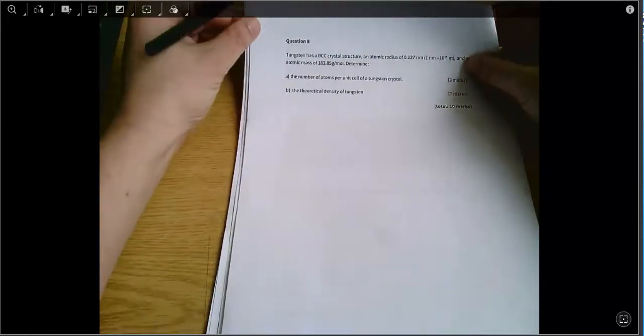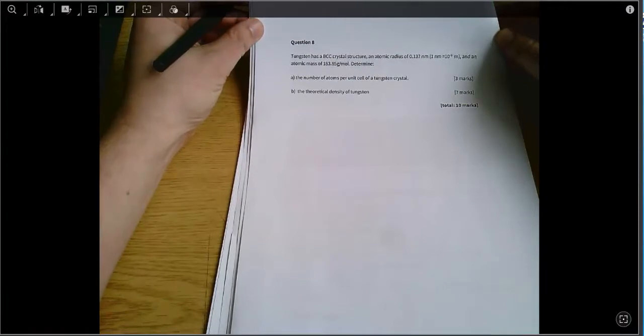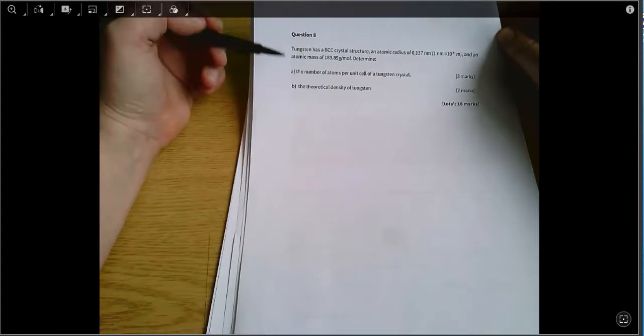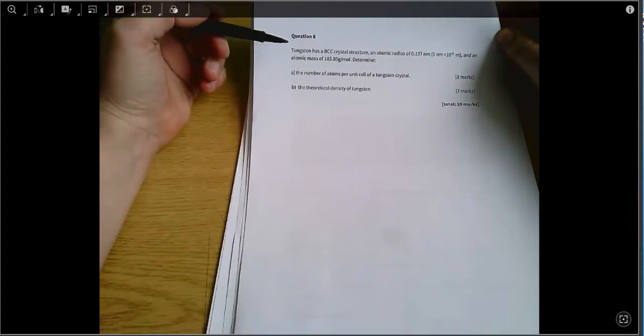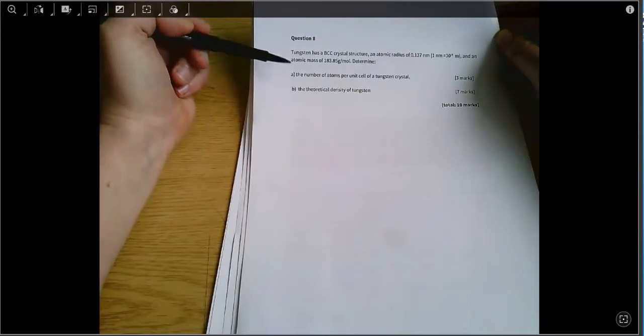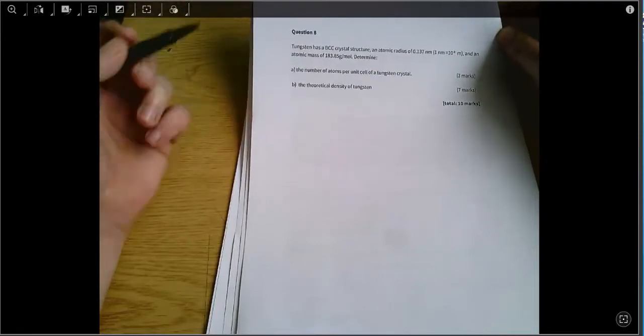OK, this is Introduction to Mechanical Engineering, 2017-18 exam, and this is question 8, which is about materials science. We're given some information about the atomic structure of tungsten and then we're asked for the number of atoms per unit cell of a tungsten crystal and the theoretical density of tungsten.